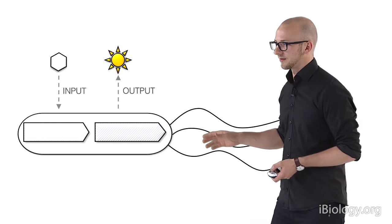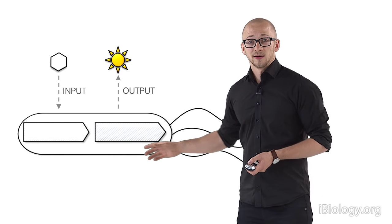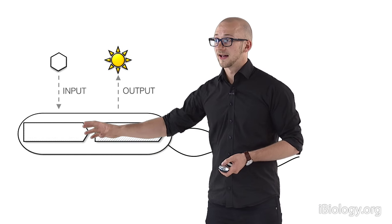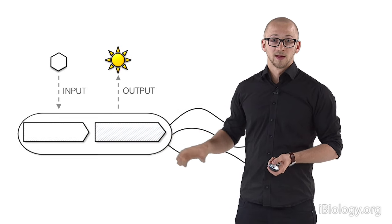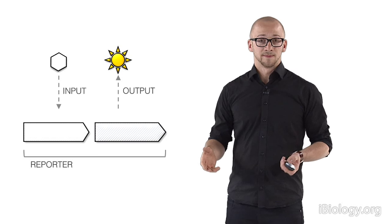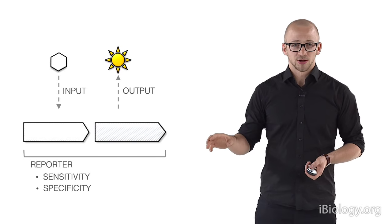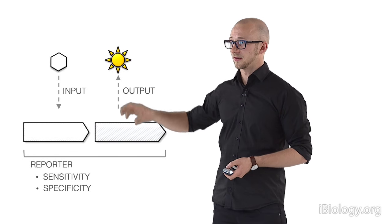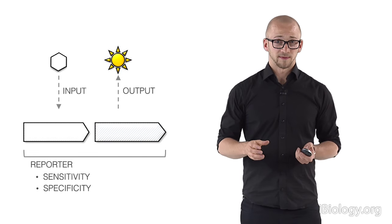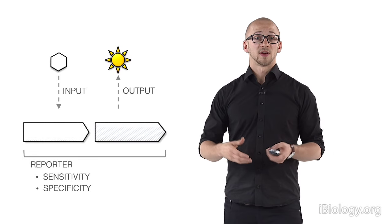Now the structures in the microbe that would do it would require some part that takes the input signal and then launches some kind of output signal. This we would call a reporter gene. A reporter gene should be very sensitive. It should detect really small amounts of the input signal. And it should also be very specific. It should not react to just anything.